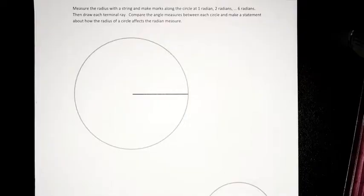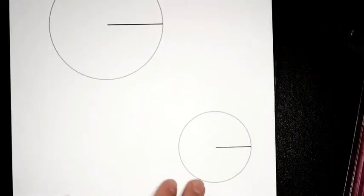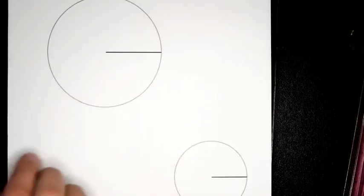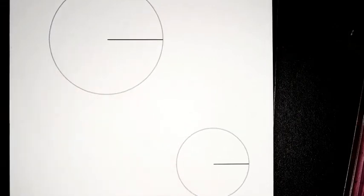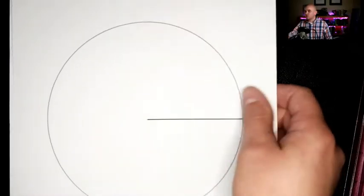This is what I do. I start with three circles, each with a radius clearly marked. This is my small circle, my medium circle, and then I have a larger circle right here.